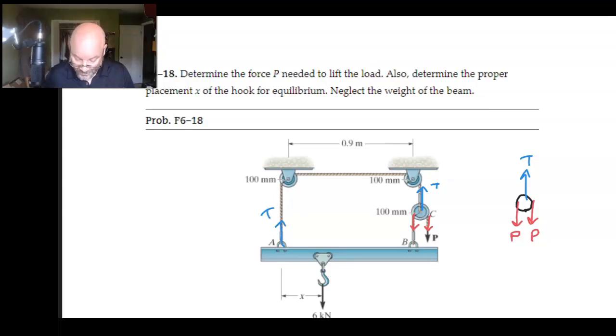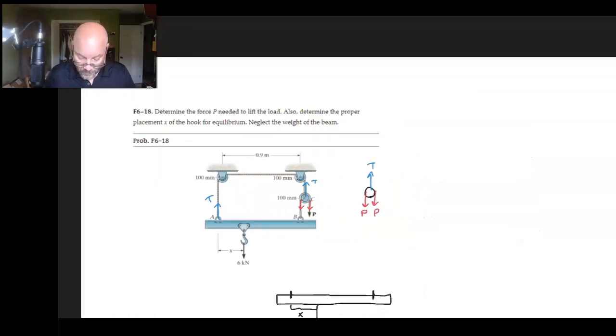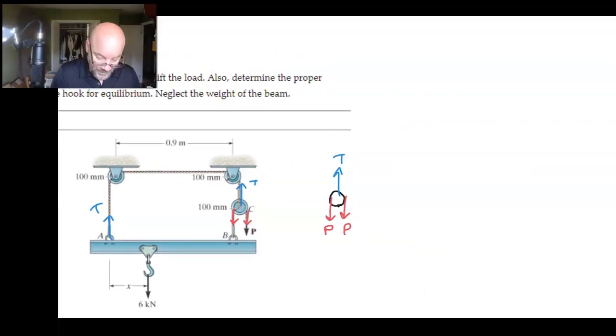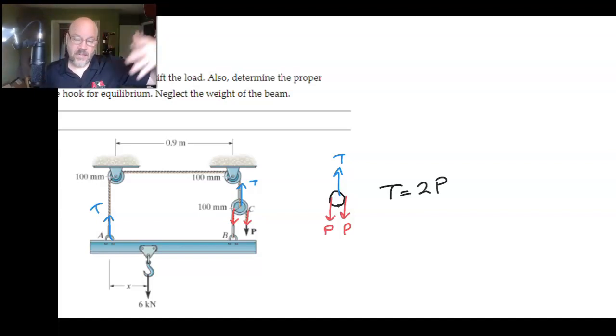But the thing we need to note right now is how T is equal to 2P. So whatever we find for P, we get twice out of that for T.